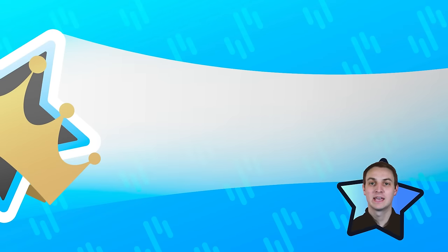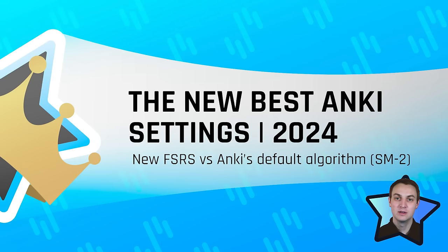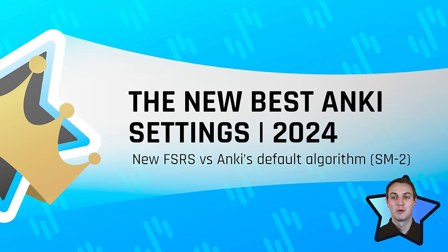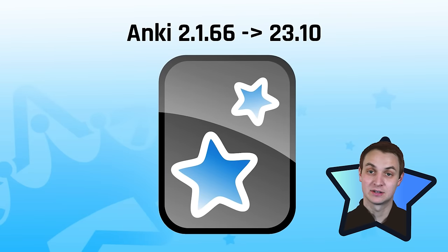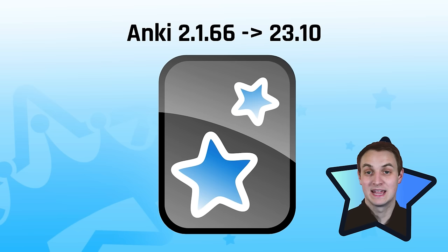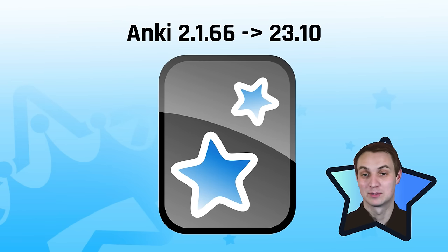In this video with the Ankiing, I'm going to go over the new best Anki settings. We're going to talk about how the new FSRS algorithm stacks up to Anki's original SuperMemo 2 algorithm. This was introduced in Anki 23.10 — FSRS is now integrated and you can turn it on. There's also image occlusion natively added, so if you have Anki iOS you can add it from your iOS app and make image occlusion cards.